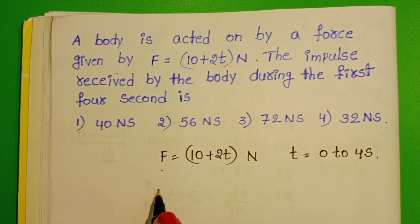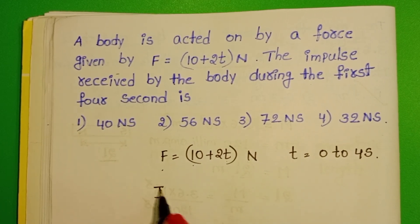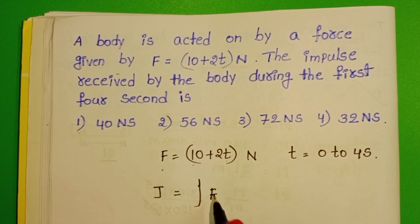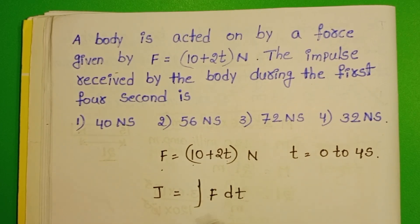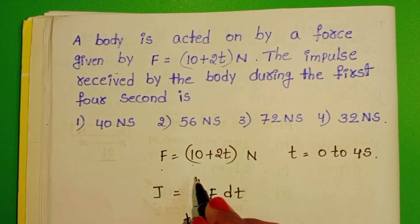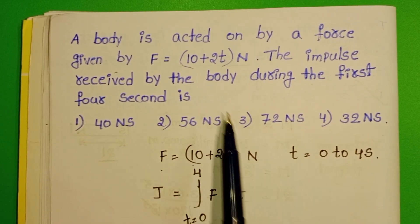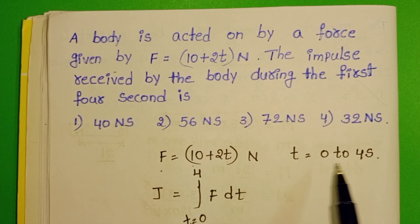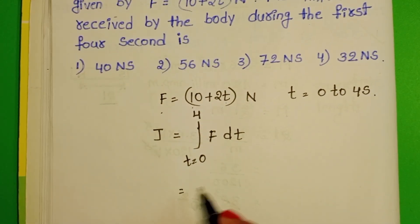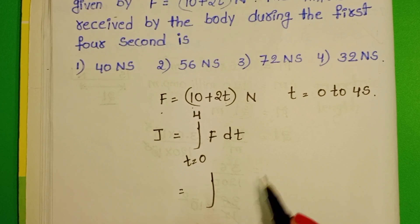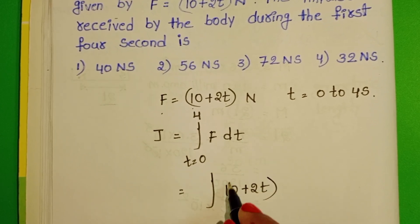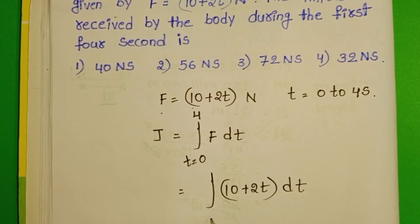When force is a function of time, the formula to find out the impulse is the integral of F dt. Here the time interval is from 0 seconds to 4 seconds, because the given time is the first 4 seconds. In place of force, substitute 10 plus 2T into dt.